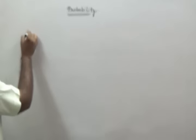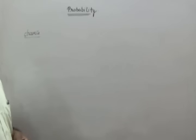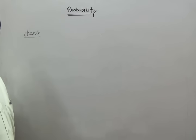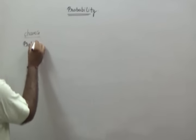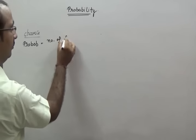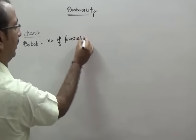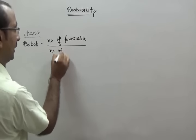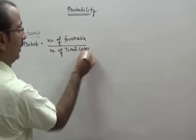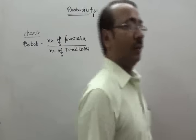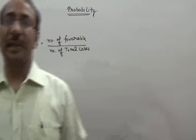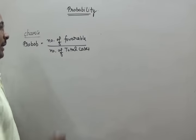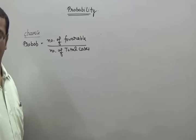When we talk about probability in general sense, probability means the chance of happening an event. The basic definition of probability is: number of favorable cases divided by number of total cases. For finding the number of favorable cases and total cases, we apply the concept of permutation and combination — that is used for finding both the number of favorable cases as well as the total number of cases.